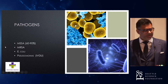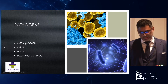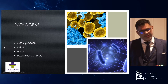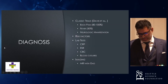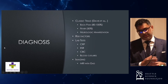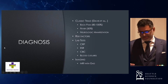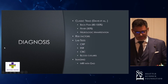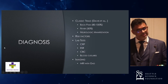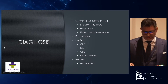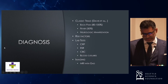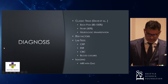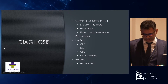The common pathogens are predominantly MRSA, MSSA, E. coli from urinary tract infections, and Pseudomonas from IV drug abuse. The classic clinical triad is back pain, fever, and neurologic manifestation, but that doesn't occur frequently. Understanding risk factors and monitoring lab tests — including CRP, ESR, CBC, and blood cultures — along with MRI imaging, helps to further establish the diagnosis.